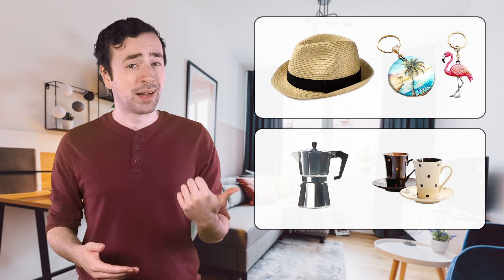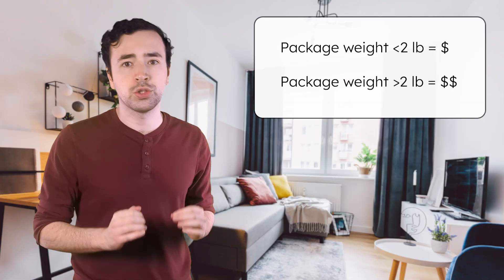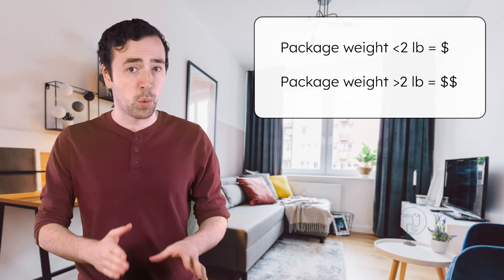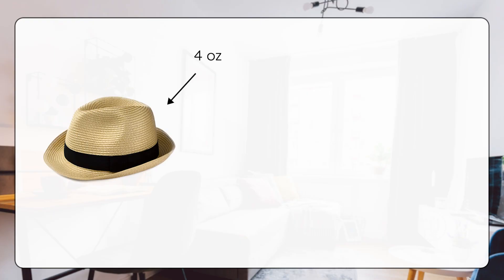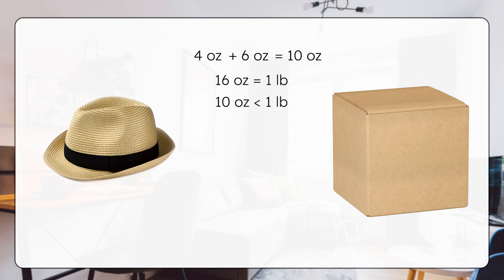To weigh my souvenirs, which unit of measurement should I use for the lighter objects, like the hats and keychains? Ounces, yeah. And what about the heavier gifts? Do you think I'll need to measure this in tons? No — I was able to carry all these souvenirs in my suitcase, so pounds should be the right unit for the heavier items. I need to figure out if my souvenirs are going to be affordable to mail. The post office charges a lower rate for packages under 2 pounds, but anything over 2 pounds costs more. The hat weighs 4 ounces, and the shipping box adds another 6 ounces, for a total of 10 ounces. How many ounces are in a pound? 16 ounces, right. Is this package going to ship at the lower rate? Yeah — 10 ounces is less than 1 pound, so it's definitely less than 2 pounds.